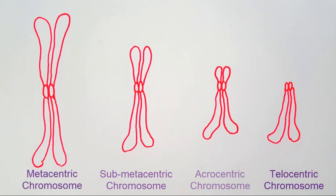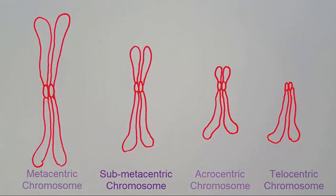The size and the shape of the chromosomes are variable in different phases of the cell cycle.